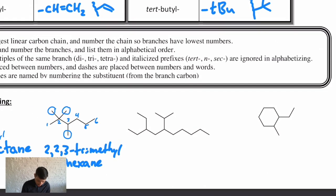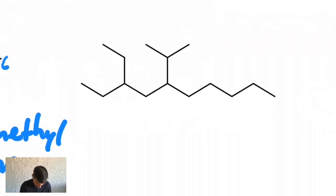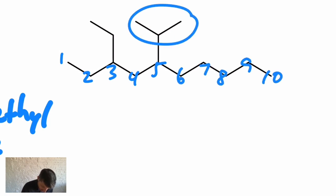So I'd like you to hit pause and try the last two—we get a cyclic one at the end there and a lengthier one—and then check back and see how you did. Okay, let's see how you did. So this one, I'm gonna number left to right: 1, 2, 3, 4, 5, 6, 7, 8, 9, 10. This is a decane.